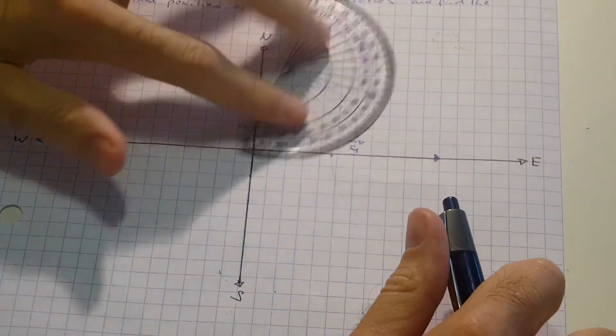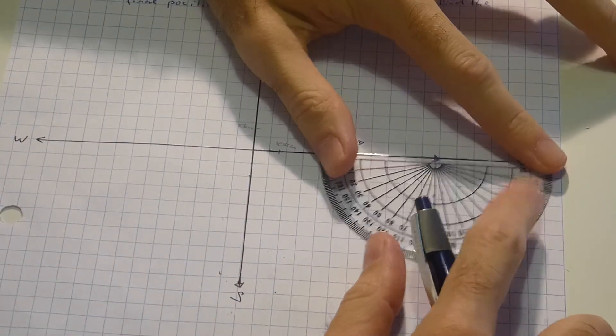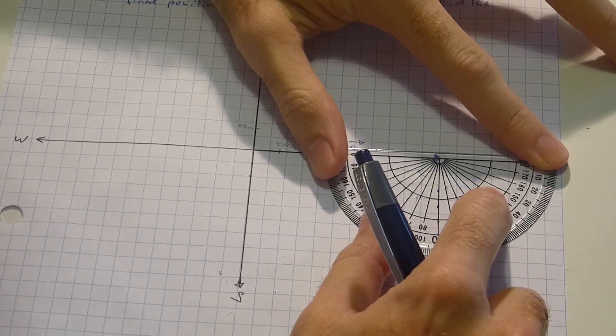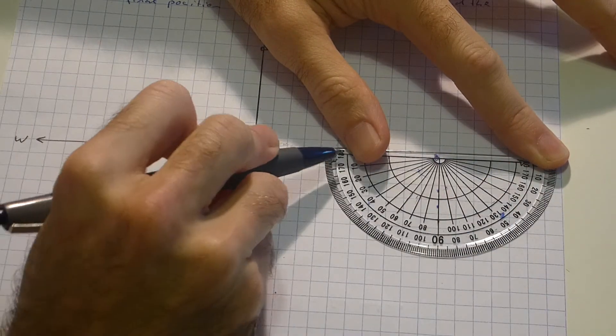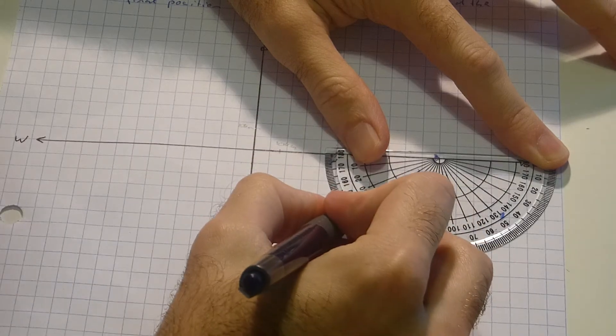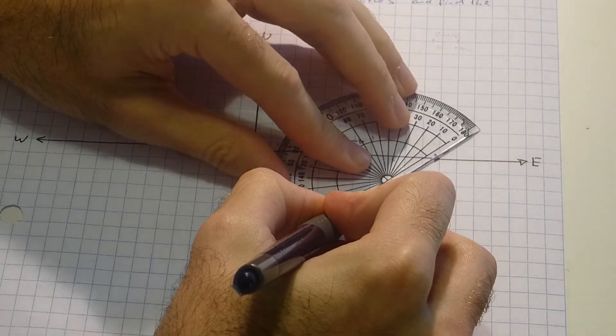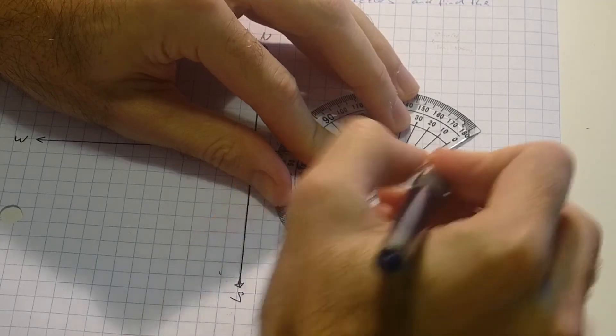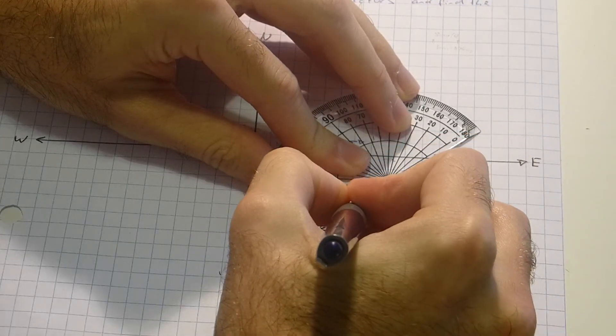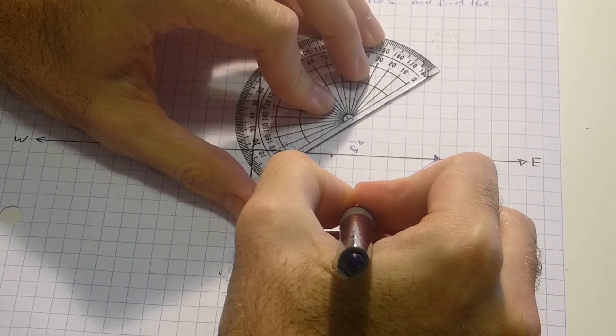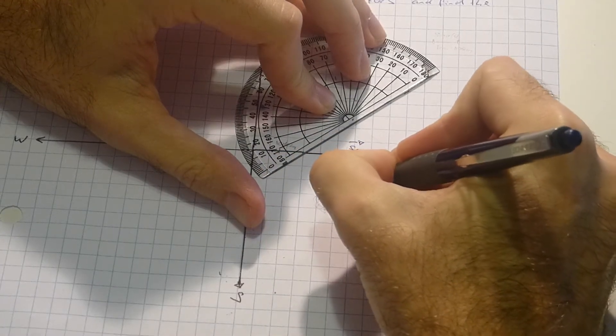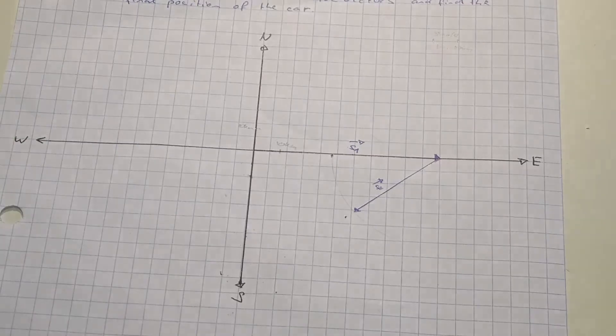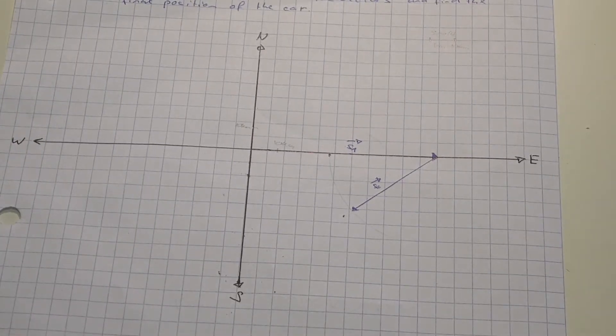And we just measure our 40 degrees. 10, 20, 30, 40. And for my S2 it would be somewhere here. Actually just did kind of the head to tail.